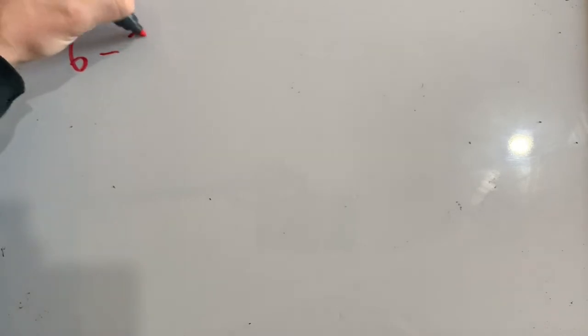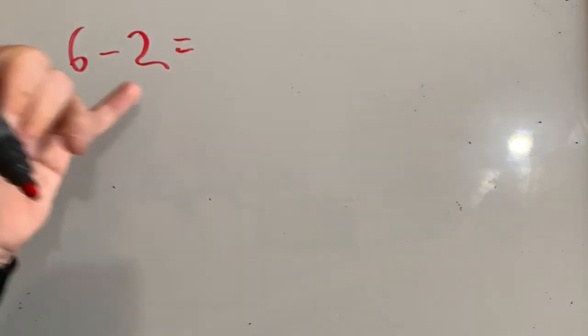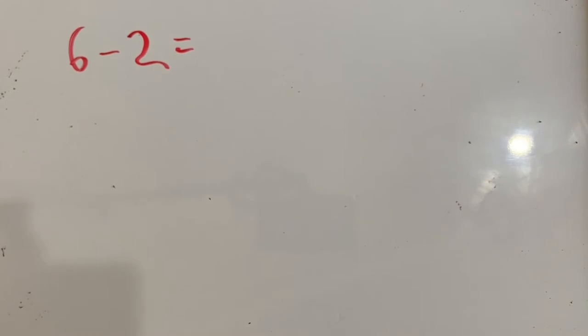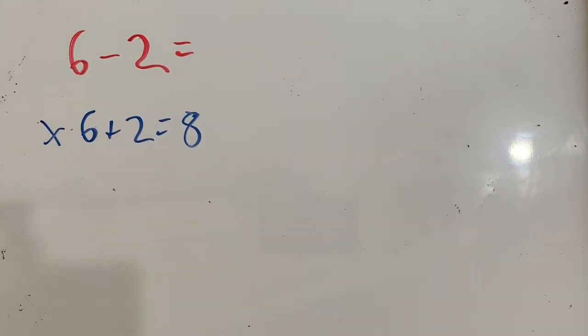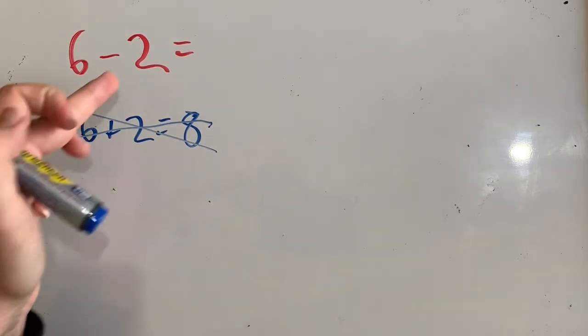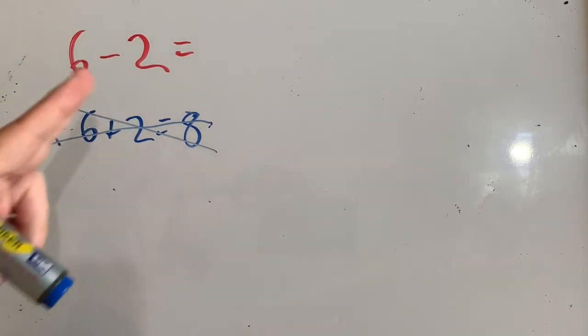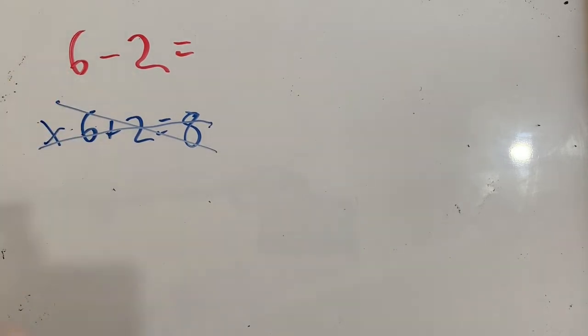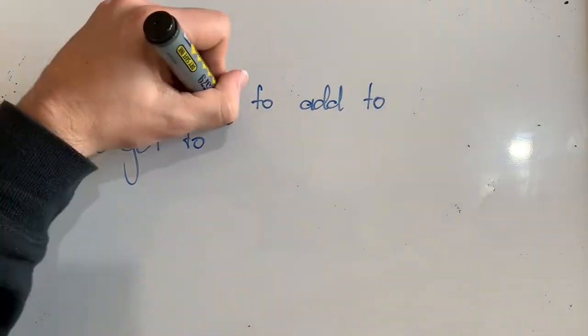Let's start with a very simple problem to demonstrate this idea: 6 minus 2. I could count backwards and that would get me there, but today I'm going to add to get there. What I don't mean is 6 plus 2 equals 8 — that is not the solution. What I mean is that I'm finding the difference: what I need to add to the smaller value to find the larger value. So really I'm asking, what do I need to add to 2 to get to 6?